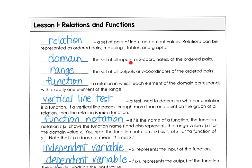The domain is the input, or the x-coordinates. The range is the output, or the y-coordinates. And a function is a relation where every element of the domain corresponds with exactly one element of the range. Then the vertical line test is the test we use to determine whether a relation really is a function. If a vertical line passes through more than one point on the graph of a relation, then the relation is not a function.